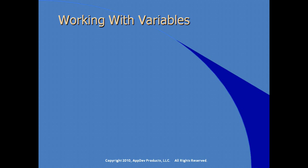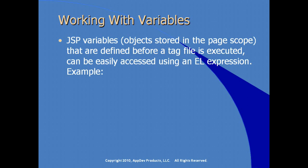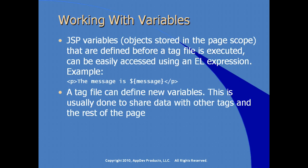Working with variables from a tag file — for a JSP developer who wants to write custom tags. JSP variables, meaning objects stored in page scope defined before a tag file gets executed, can be easily accessed using an expression language expression. For example, the message variable is accessed using an EL expression. A tag file can also define new variables, usually to share data with other tags in the rest of the page. If multiple tags are used from the same directory and we want to share data across variables, this is one of the ways to do it.